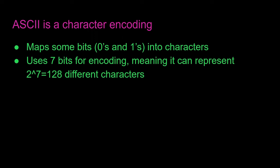ASCII uses seven bits for encoding, meaning that there are 2^7, which is 128, different characters that can be represented.